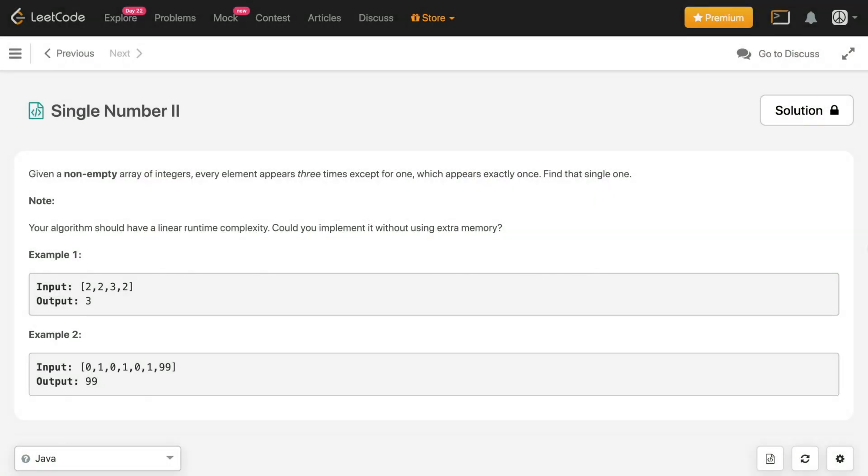Hey, how's it going guys? So in this video, we'll discuss this problem, Single Number II. Given a non-empty array of integers, every element appears three times except for one, which appears exactly once. Find that single one. Note, your algorithm should have a linear runtime complexity and could you implement it without using any extra memory?